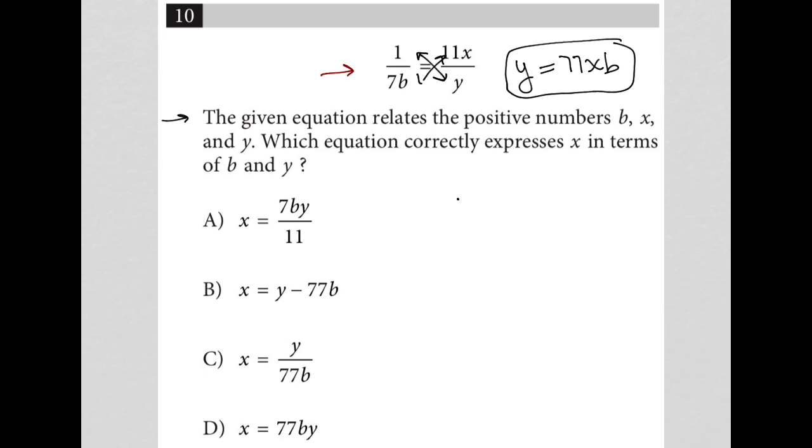Which means I'm going to take my equation that I made, y equals 77xb, and I'm going to get x alone by dividing both sides by 77b.